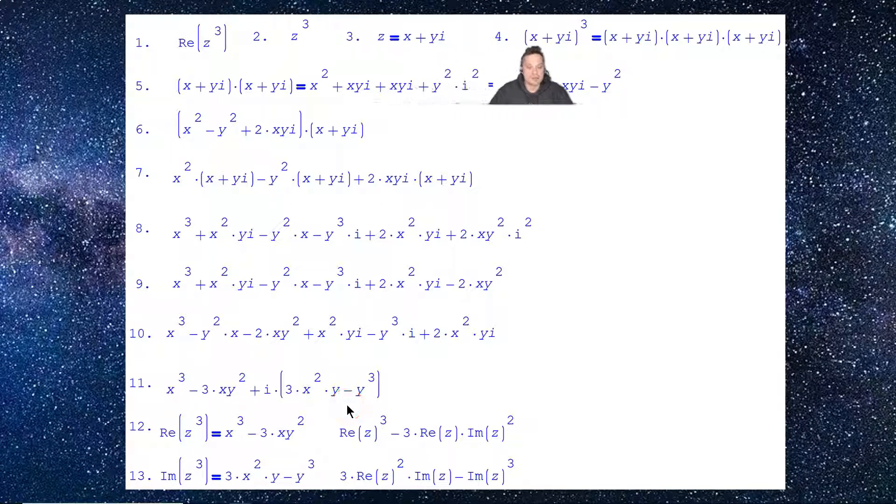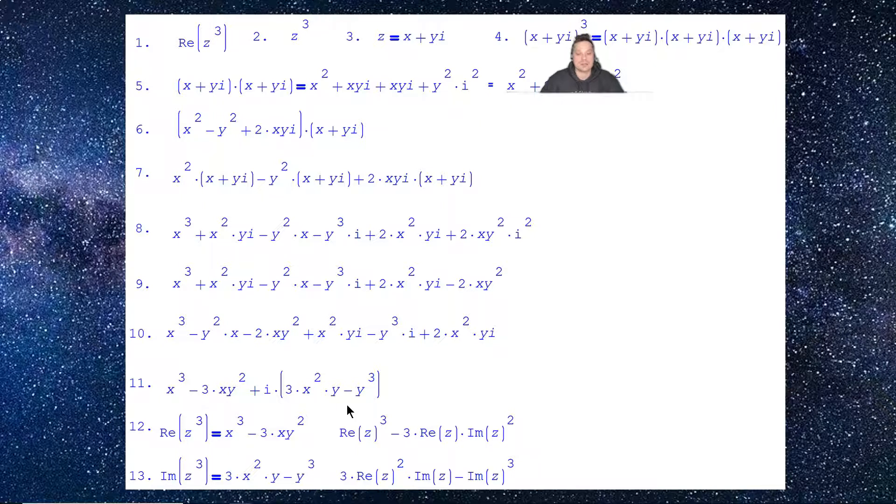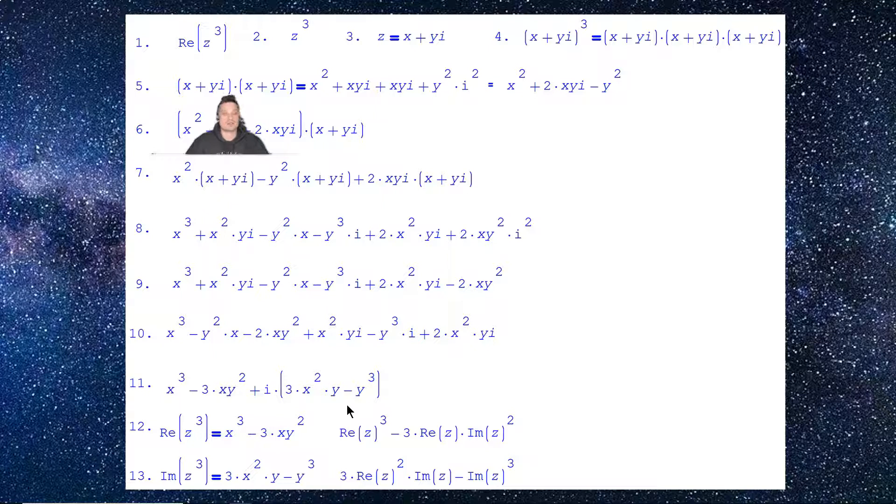So first I'm going to write this as x plus yi and then cubed. So that means, remember, that means x plus yi times x plus yi times x plus yi. Let's continue. Let's go on to step 5 essentially. I have x plus yi times x plus yi, I'm just going to FOIL that out first. So we're going back to basic rules, FOIL. So multiply out in other words.